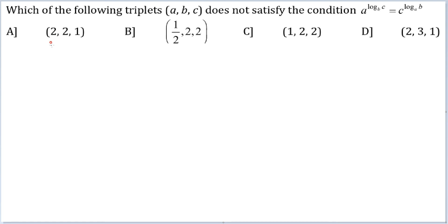Let's look at the first option (2, 2, 1). If a is equal to b, on the LHS I end up getting c. And if a is equal to b, this is equal to 1, so I get RHS also c. So this satisfies, this will not be the answer.